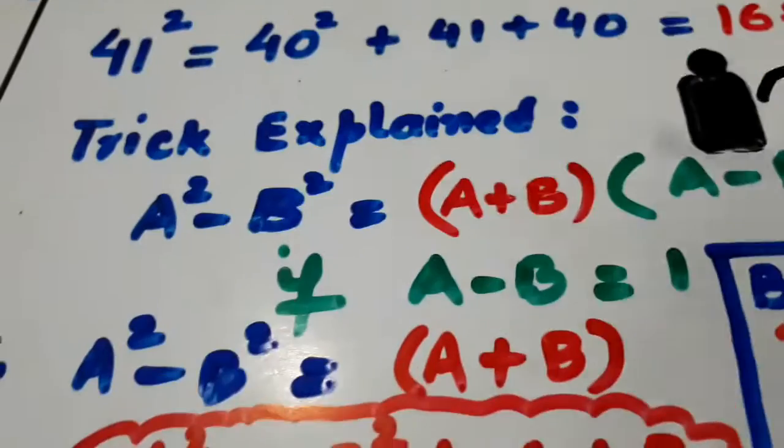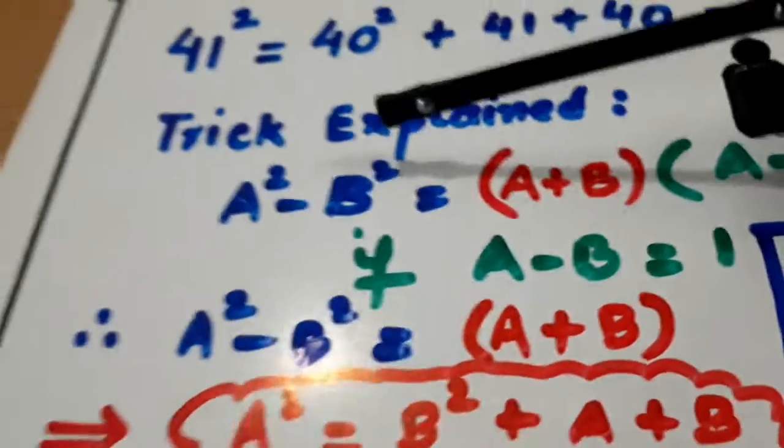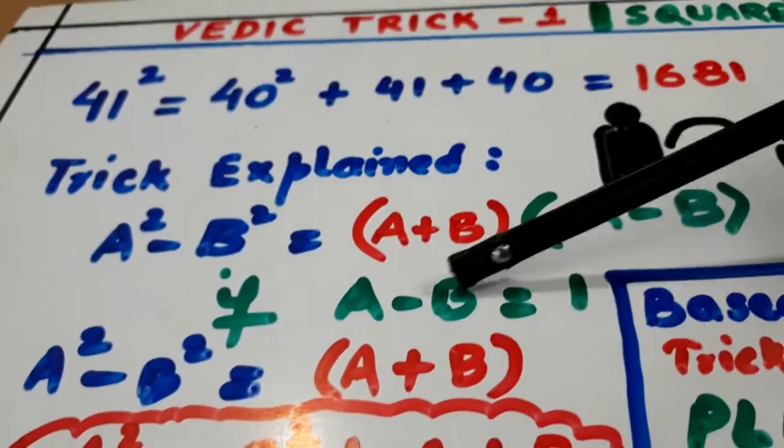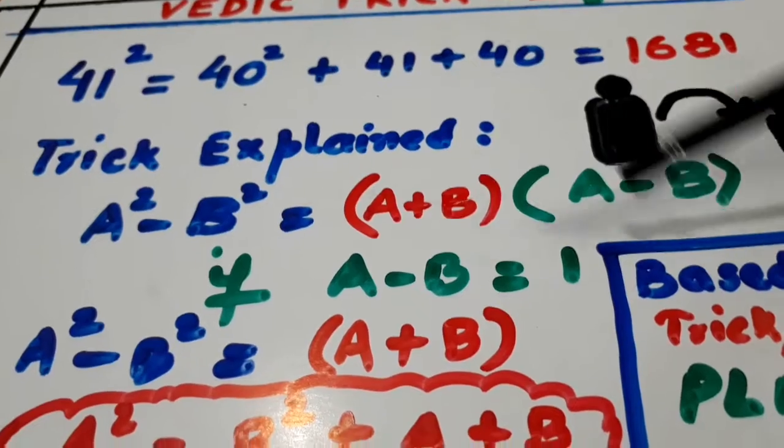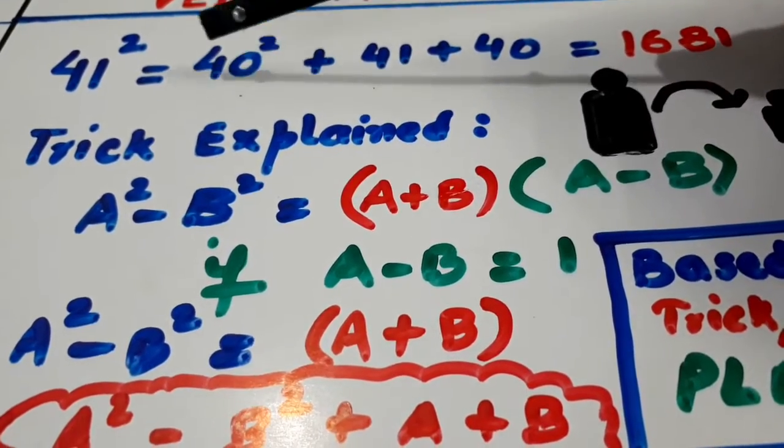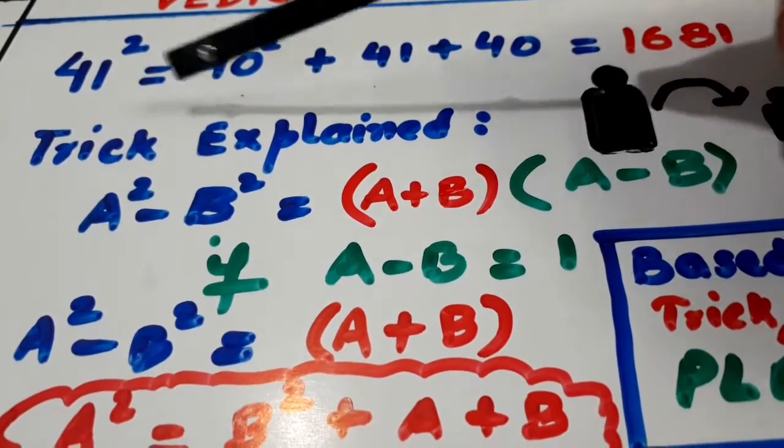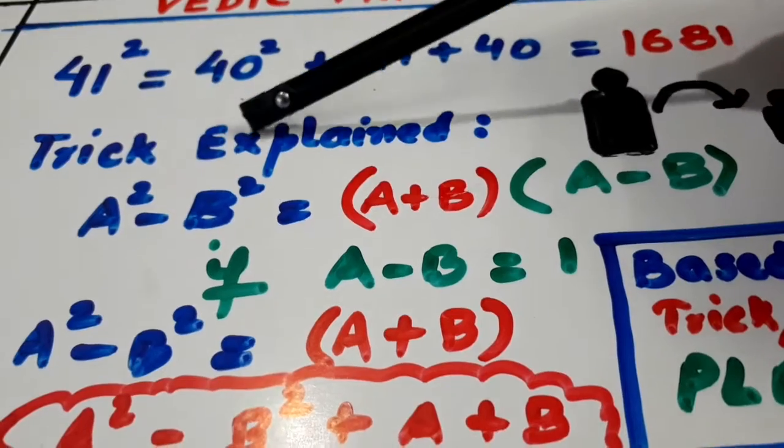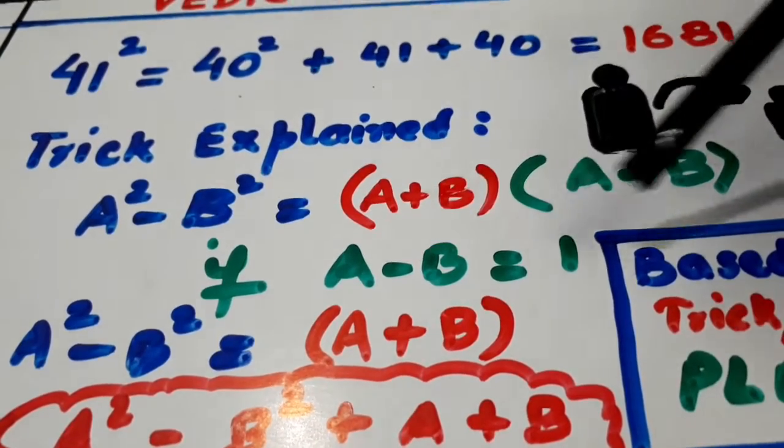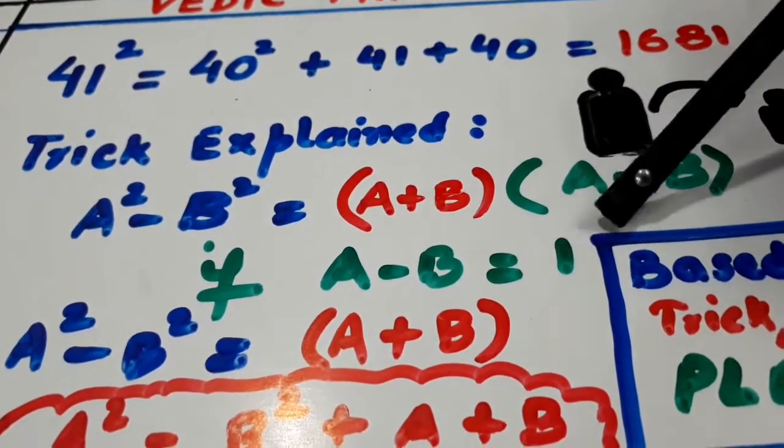The base is, I told you in that video also, it is based on A square minus B square. A plus B, A minus B. Yeh A square hai, yeh B square hai. Yeh bada hai, A square, B square chota hai. Yeh bada hai, 41 bada hai, 40 chota hai. A square minus B square, A plus B, A minus B. Deekhoi, in doonho mein fark kitna hai, one ka. A minus B kitna ho gya, one.